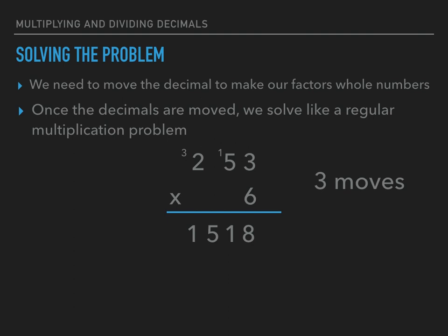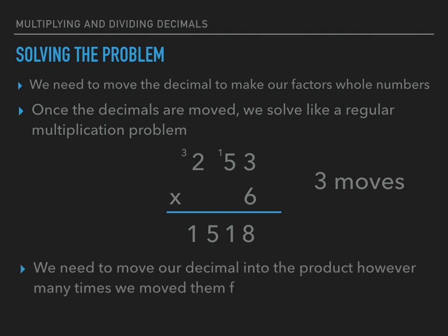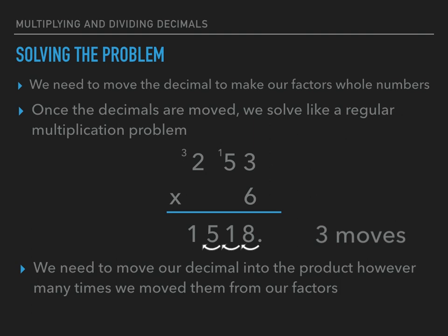But we are not done solving this decimal multiplication problem yet. We need to move our decimal back into the product however many times we moved it from our factors. We moved our decimal a total of three times. For any whole number you can assume there's a decimal point at the end of it. We're going to do the opposite of what we did before and move it to the left three places — one, two, and three. So the answer to two and fifty-three hundredths times six tenths equals one and five hundred eighteen thousandths.